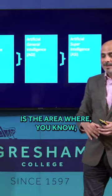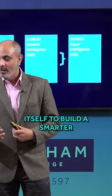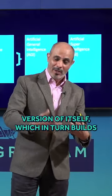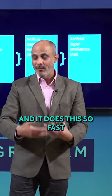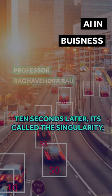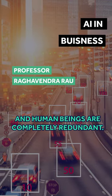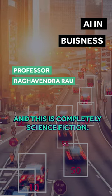Now artificial super intelligence is the area where the machine basically programs itself to build a smarter version of itself which in turn builds a smarter version of itself, and it does this so fast that by the time you invent this machine, 10 seconds later it's called the singularity and it's taken over the world and human beings are completely redundant. And this is completely science fiction.